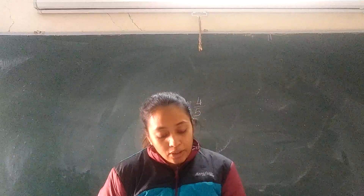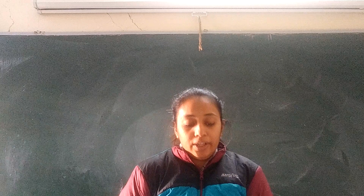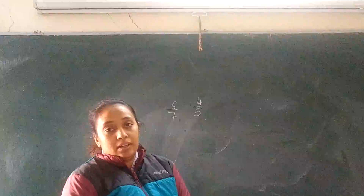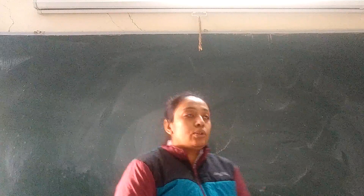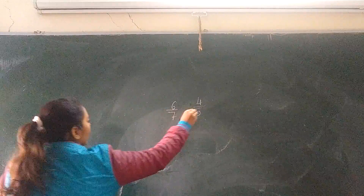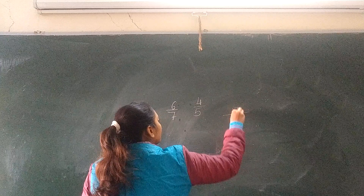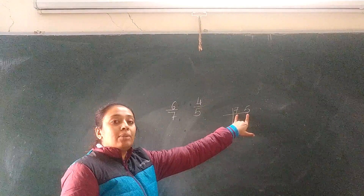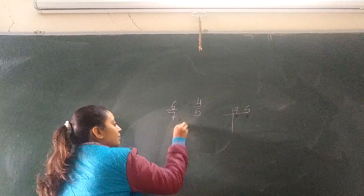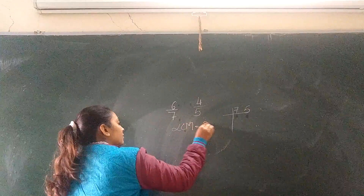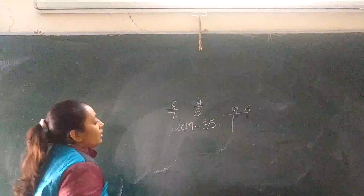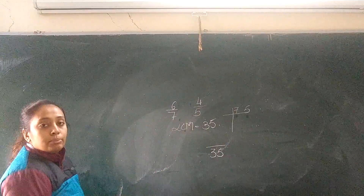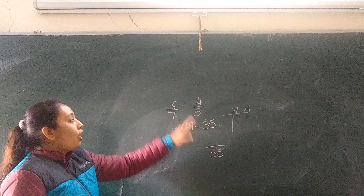To compare unlike fractions, we change them into like fractions using the following steps. First we convert them into like fractions. So what we will do is take the two denominators and find their LCM. The LCM of 7 and 5 is 35, so the denominator would be 35, same for both.